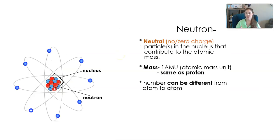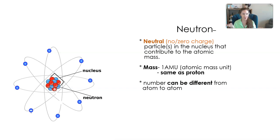Now let's talk about neutrons. Neutrons are also in the nucleus, but they have no charge — they are neutral. Remember: N-E-U, neutron, neutral. That does not mean negative; it means neutral — not positive, not negative, neutral. Neutrons also have a mass of one atomic mass unit, the same as the proton. The number of neutrons can be different from atom to atom, so we'll be on the lookout for that.